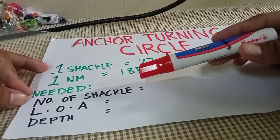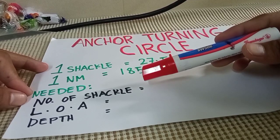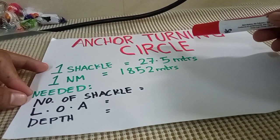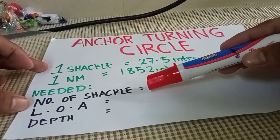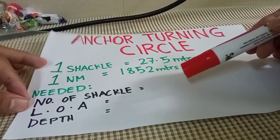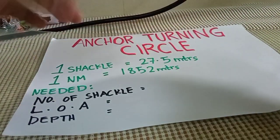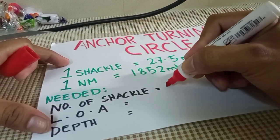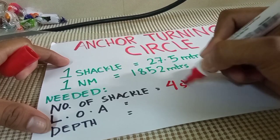these are the things that we needed in order to compute the anchor turning circle. So the first is number of shackle. So let's say that your coupling is going to let go 4 shackle into the water. So let's say 4 shackle.